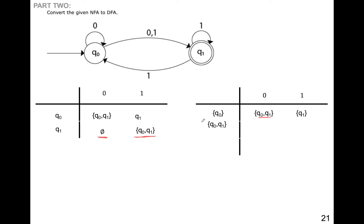To determine how this new state Q0Q1 reacts to my alphabet: if 0 goes to Q0 it will go to Q0Q1, and if 0 goes to Q1 it will go to phi. So for 0 entered in the combined state Q0Q1, it will go to Q0Q1.